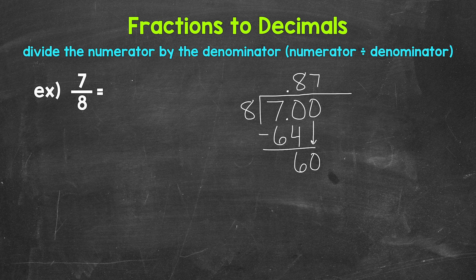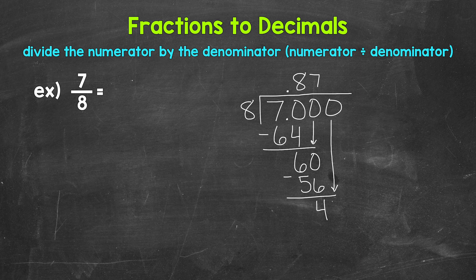That gets us to 56. So we put 7 up top there. Now we multiply 7 times 8, 56. Subtract 60 minus 56 is 4. So we don't have that clean cut zero there at the bottom yet. So let's use another zero that we can bring down in order to continue on.